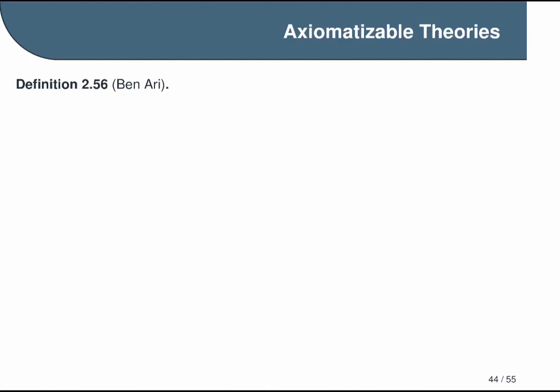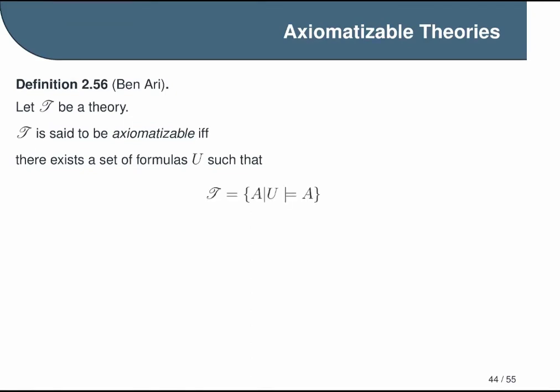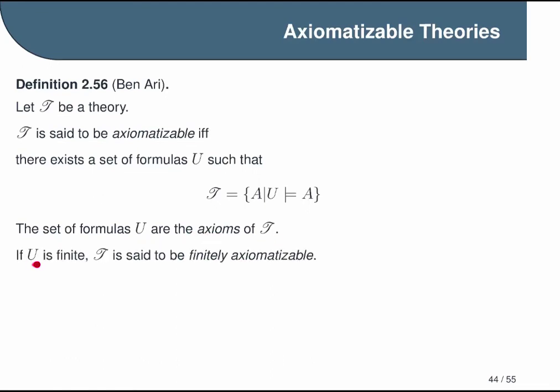Now, just as a side note, we're taking a very formal point of view as to what an axiom is here. There are other different views about what an axiom should be, and that's not something you'll run into in this class, but I just wanted to point it out in case you happen to encounter them at some point. So if we have a theory T, we say it is axiomatizable if and only if there is some set of formulas U such that every formula in T is a logical consequence of U. And we're writing that as T is equal to the set of all formulas A such that A is a logical consequence of U. The formulas in U are the axioms of our theory T. And if U is a finite set, then we say T is finitely axiomatizable.